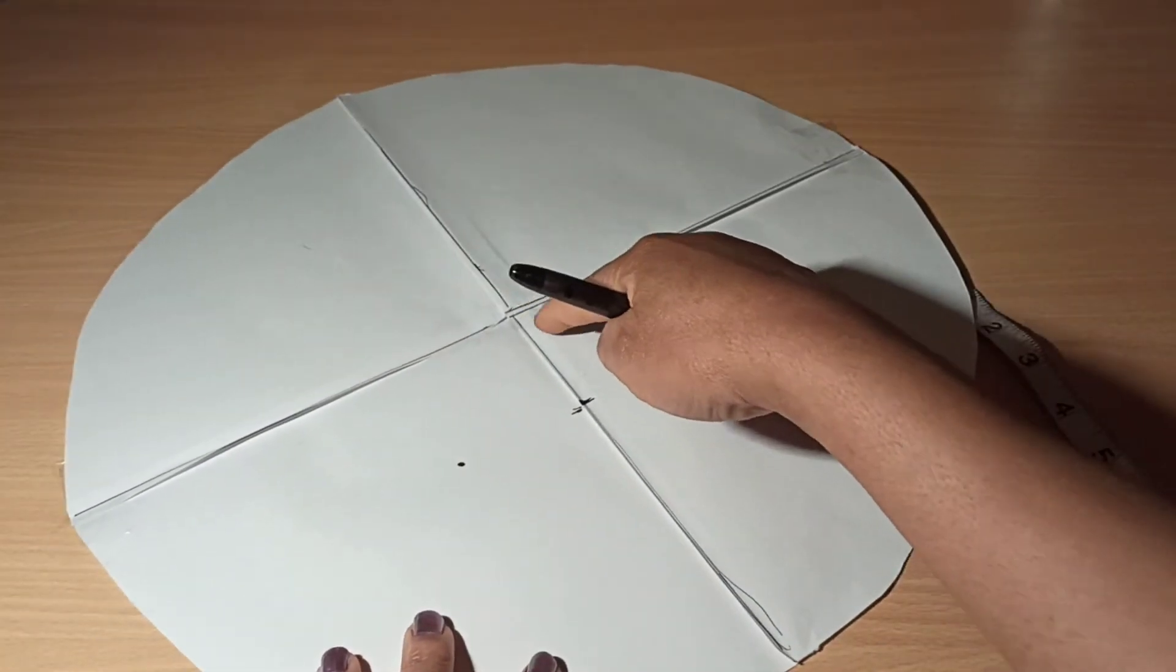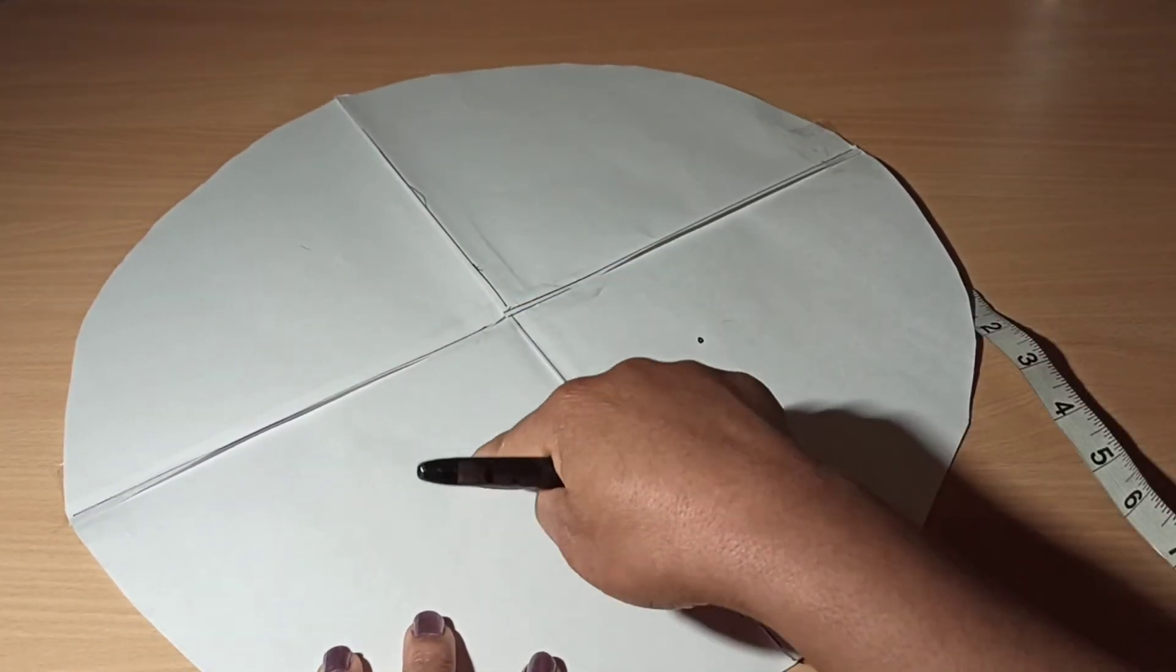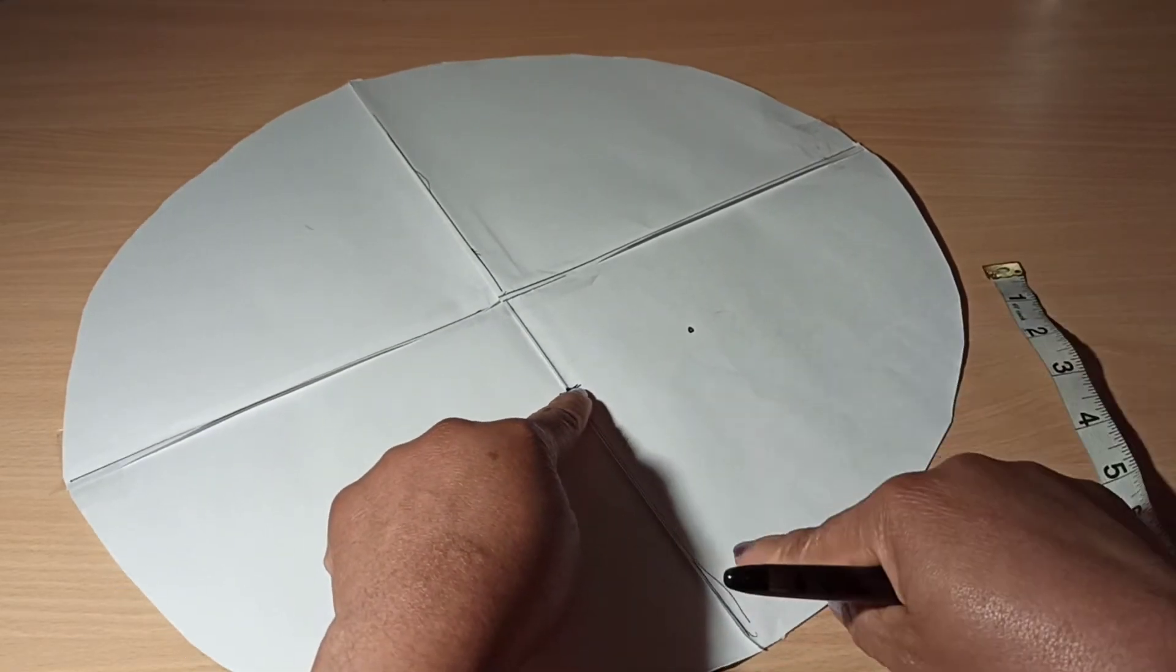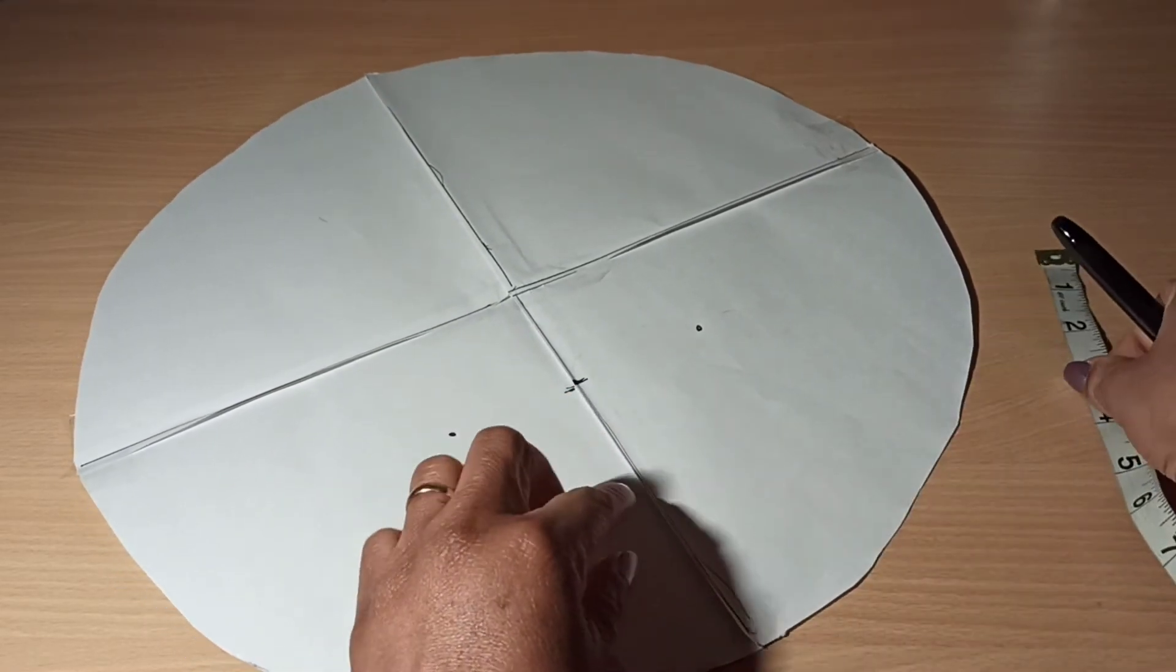Once you do that, you want to go from the two and a half inches you've already taken on that line and come down another two and a half inches.